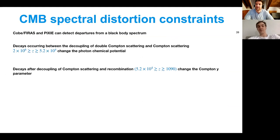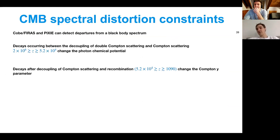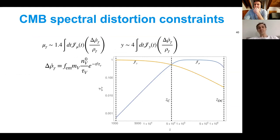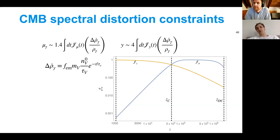The third cosmological constraint is departures from a blackbody spectrum. This applies if you have decays between the decoupling of double Compton and Compton scattering — well before recombination — up to decays after Compton scattering decoupling but before recombination. So you're constraining a different lifetime range from the ionization history. The constraints end up being on the y-parameter — a measure of how much you're changing the shape of your blackbody spectrum — and the chemical potential μ, which is basically how much you're lifting the blackbody spectrum.